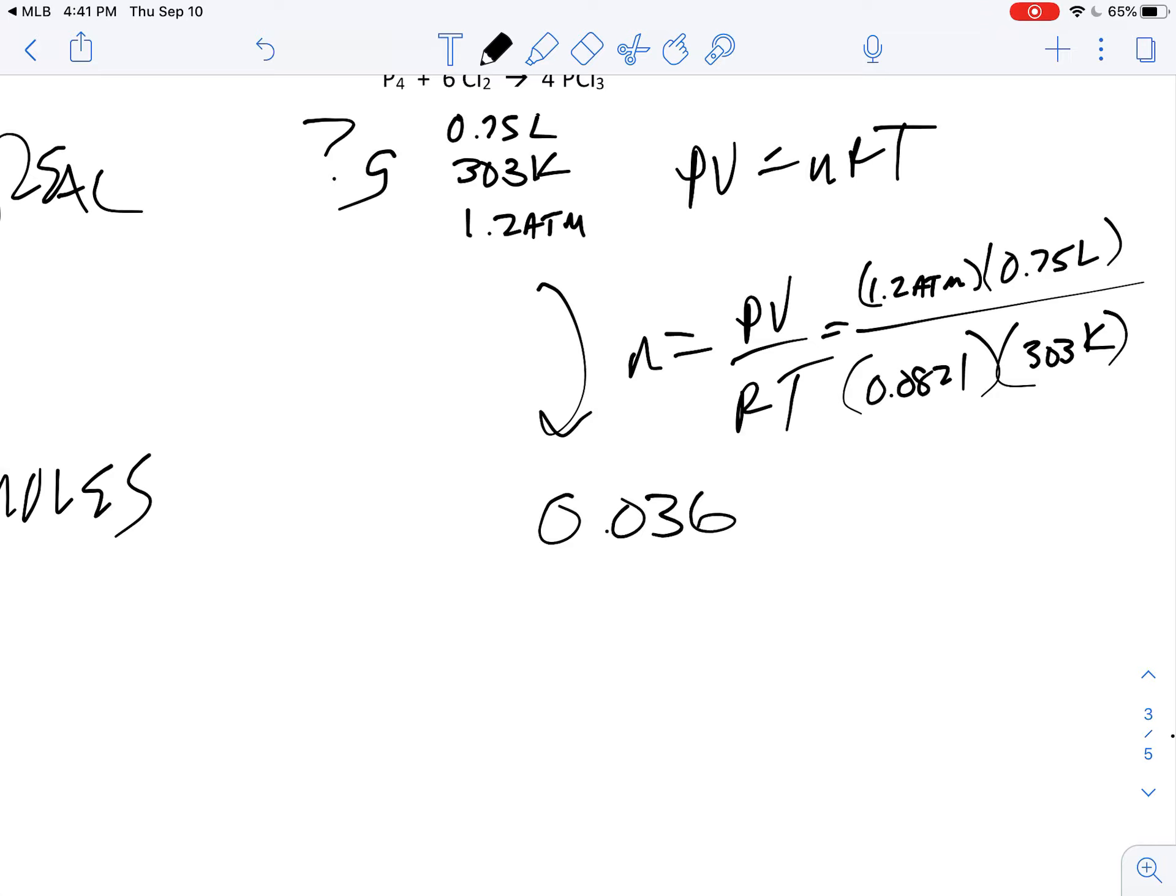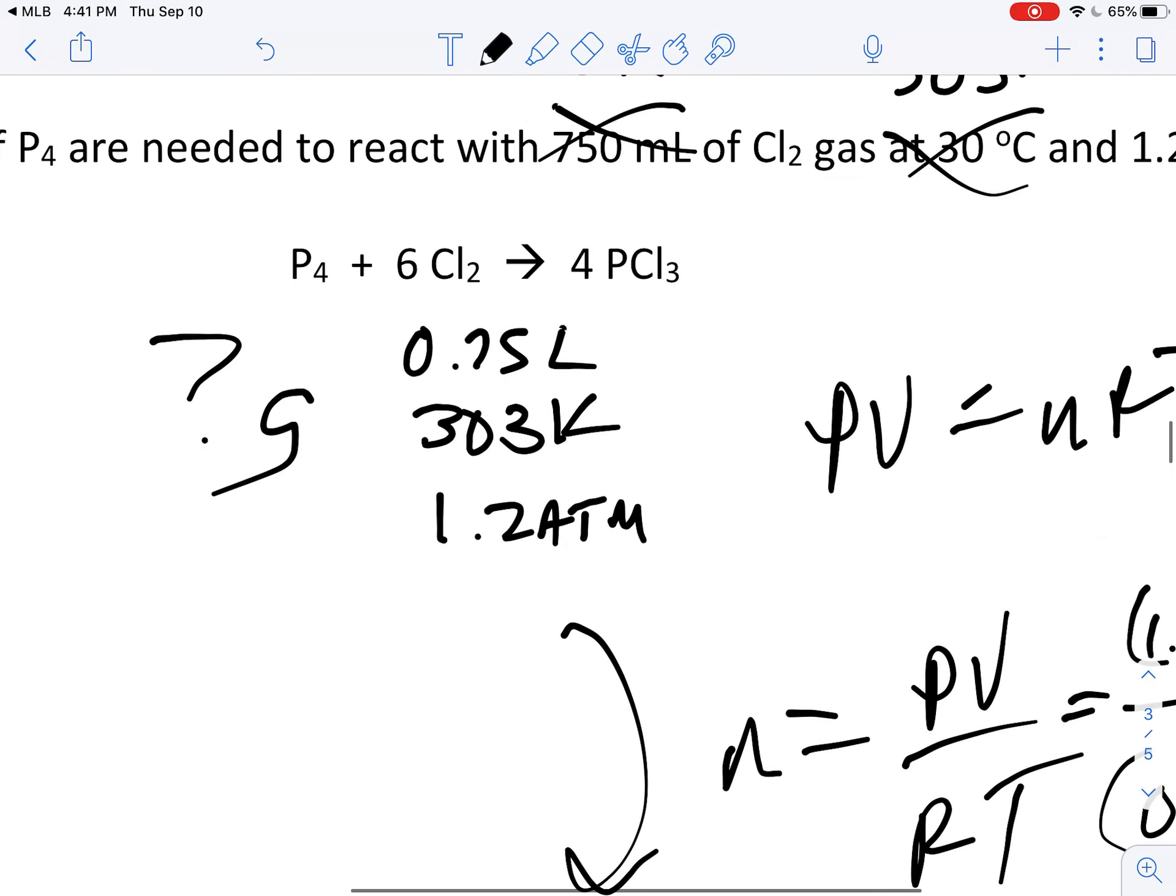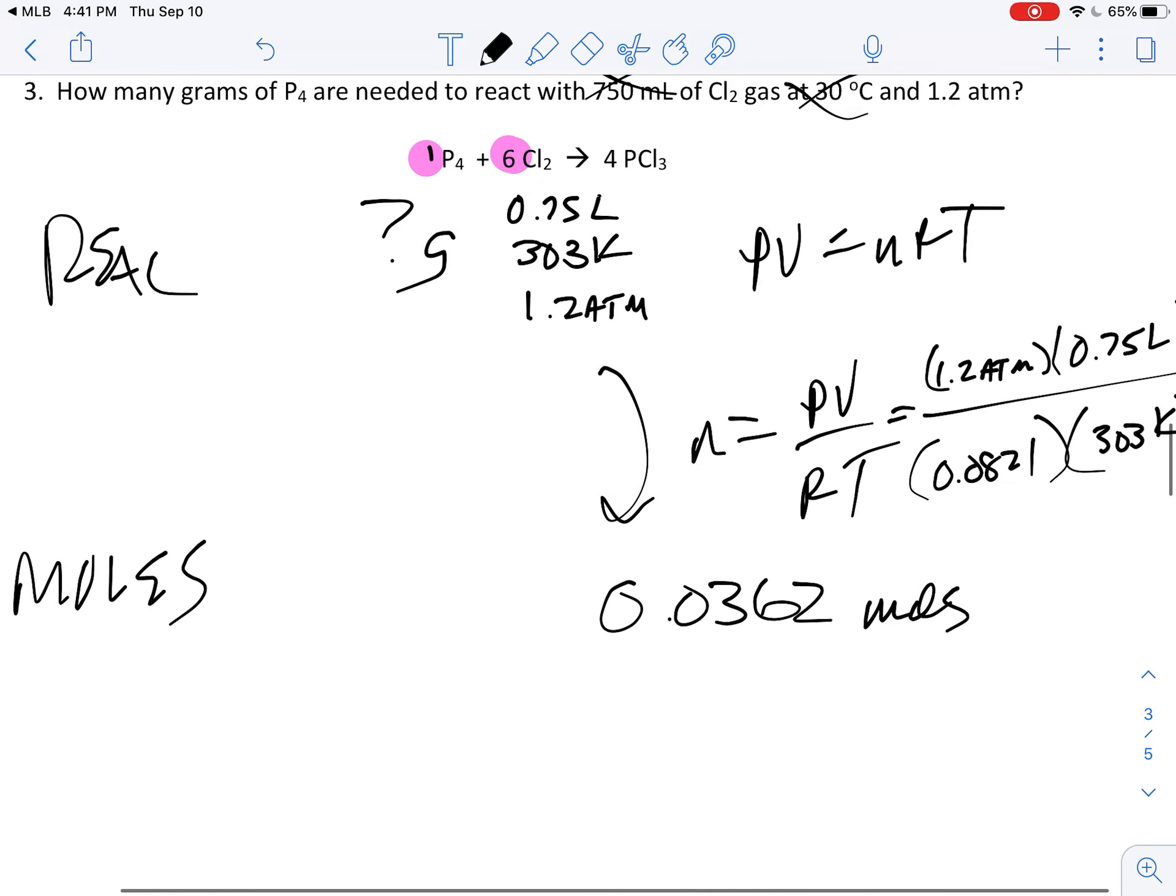I end up with 0.0362 moles there. Remember, I have not taken this six into account, nor have I taken this one into account until now. I'm going from six to one, so I'm going to come over here by a sixth. So I should end up with about 0.00603 moles here.